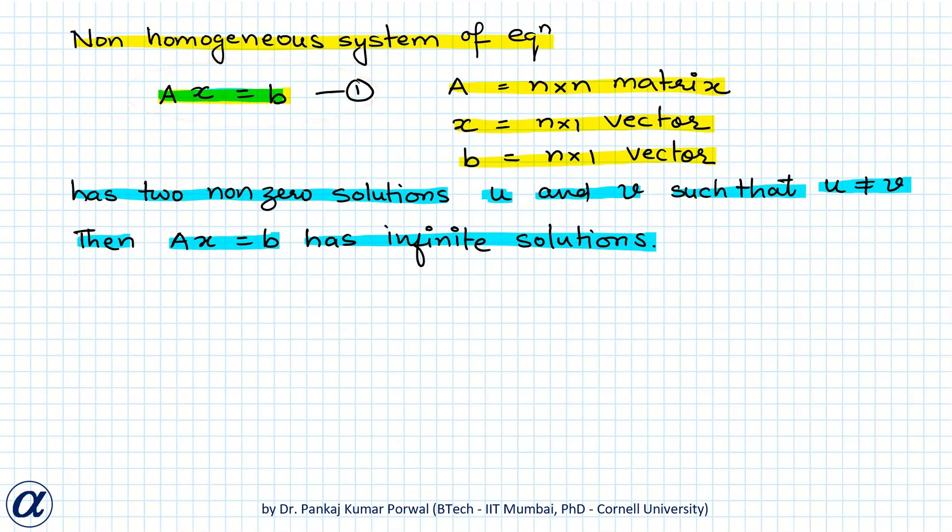So let's prove this statement. Because U and V are solutions of AX equals B, they should satisfy this equation. So that implies AU equals B (let's call this equation 2), and AV equals B (let's call this equation 3).